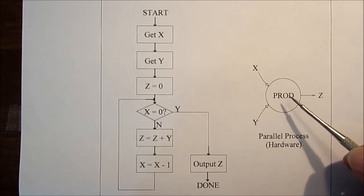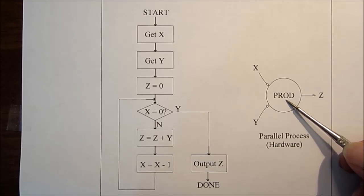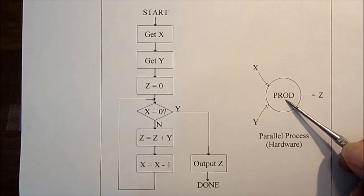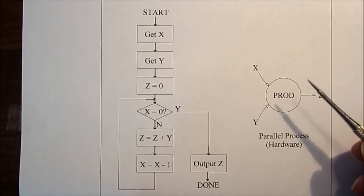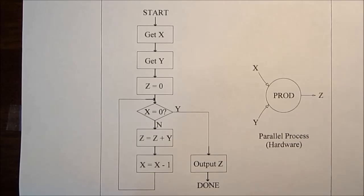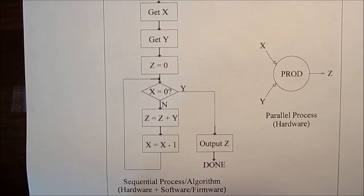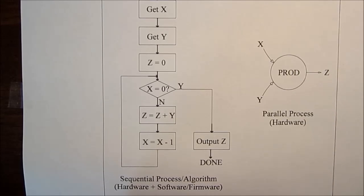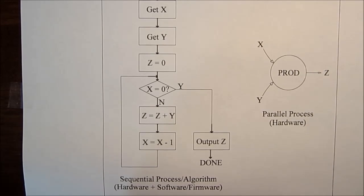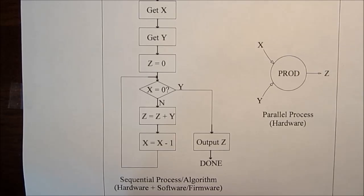So this is hardware. This doesn't have, by definition, any sequential processes in it. Therefore it cannot have code, it cannot have assembly language, it cannot have microcode. This is all done in hardware. So that's why we call this the sequential process or algorithm versus parallel systems.